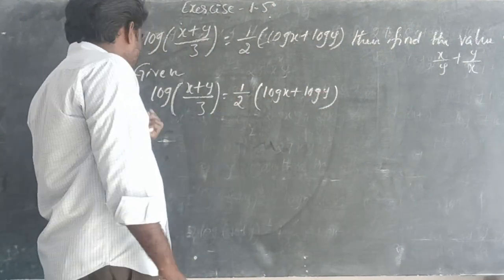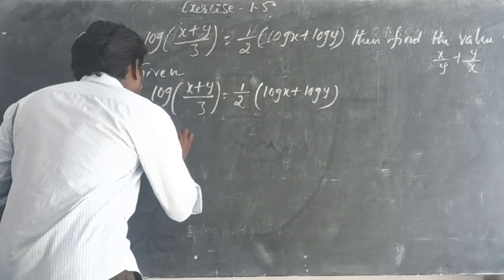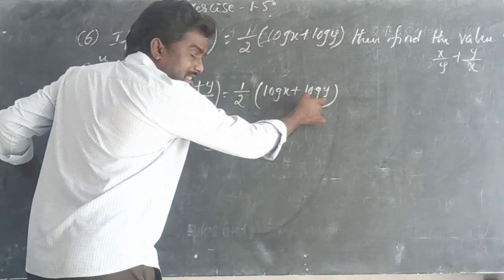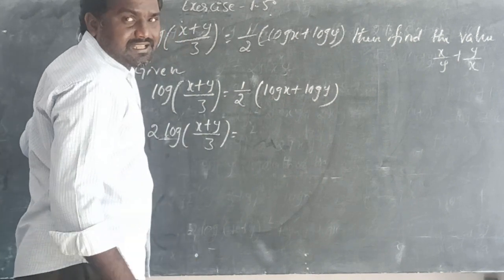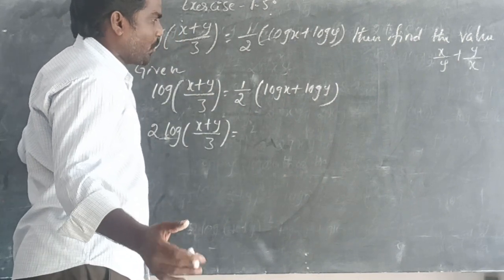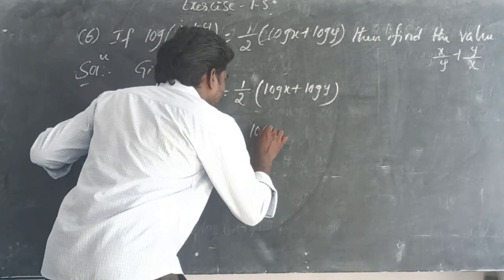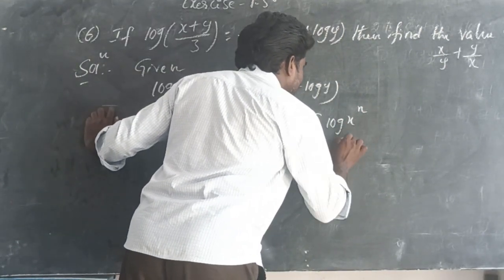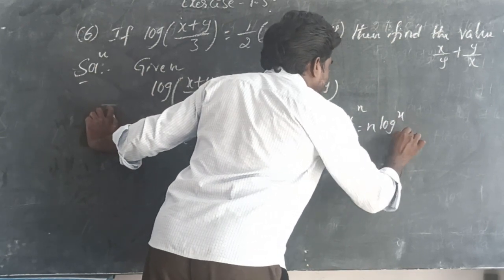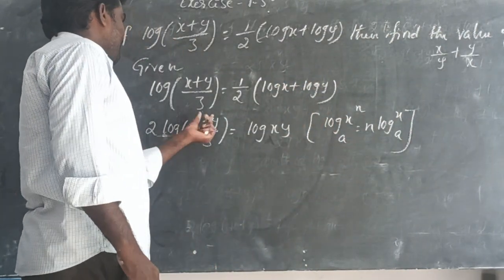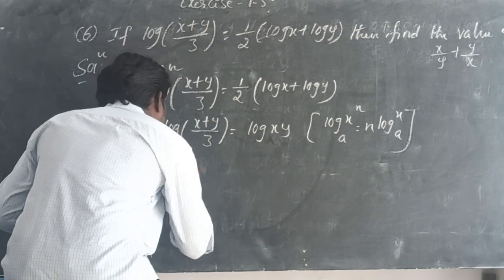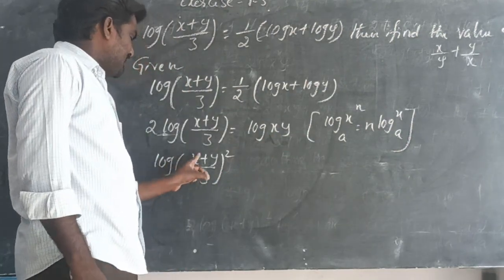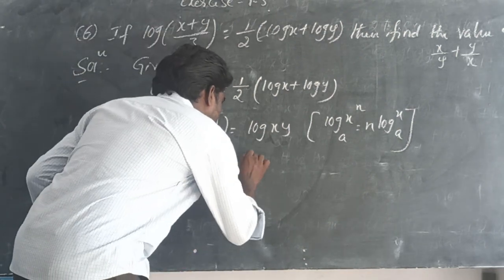Here, this 2 goes to the other side as a multiplier. So 2 log((x+y)/3) equals log x plus log y, which equals log xy using the product formula. Using the power formula, log((x+y)/3) whole square equals log xy.